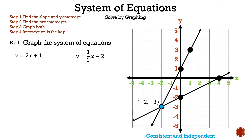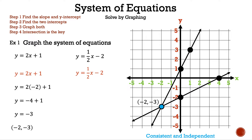Now let's check our answer by substituting negative 2 for x into both equations. If we get negative 3 for both, then our graph is correct. For the first equation: y is equal to 2 times negative 2 plus 1. 2 times negative 2 is negative 4, and negative 4 plus 1 is negative 3. So y is equal to negative 3, which means our point is negative 2, negative 3. For the second equation: y is equal to 1 half times negative 2 minus 2. 1 half times negative 2 is negative 1, and negative 1 minus 2 is negative 3. So y is equal to negative 3, which means our point is negative 2, negative 3. Since we match, our answer is correct. That is example 1.